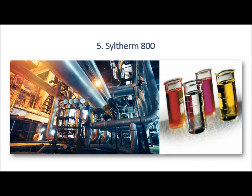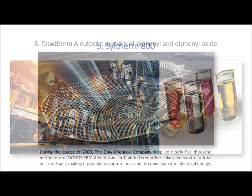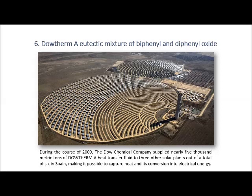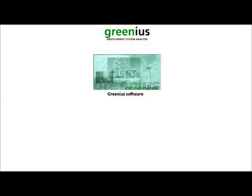The fluid is essentially odorless and has low acute oral toxicity. Six, Dowtherm A: a mixture of biphenyl and diphenyl oxide. It may be used in systems employing either liquid or vapor phase. In order to determine the most suitable heat transfer fluid for a small parabolic trough plant with a capacity of one megawatt, several simulation runs had been performed using TRNSYS software.